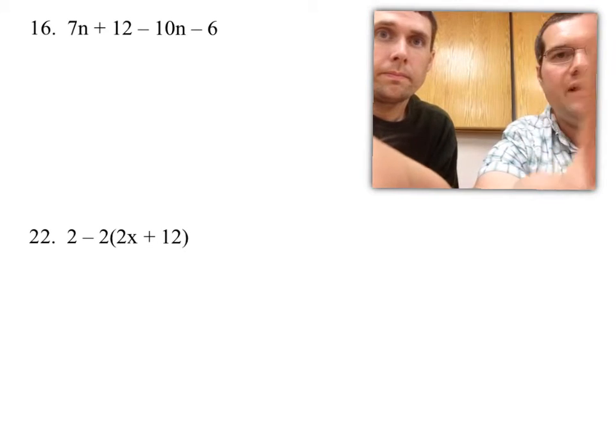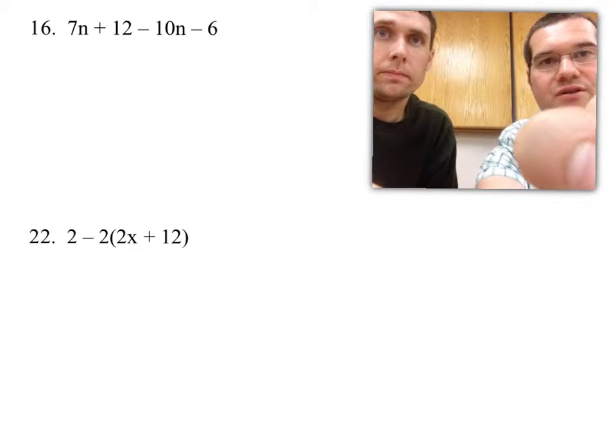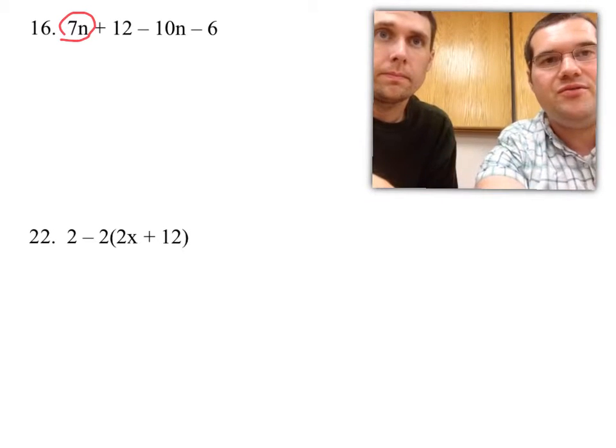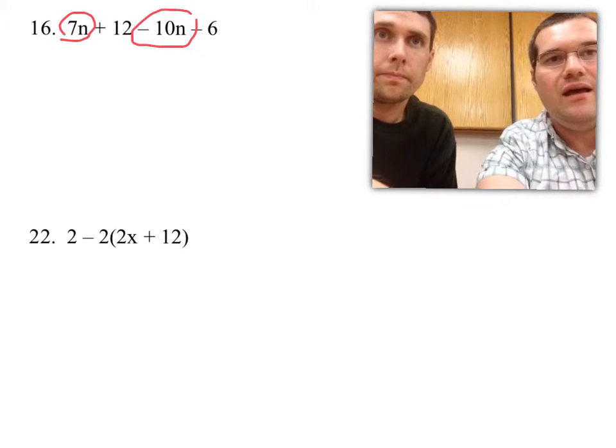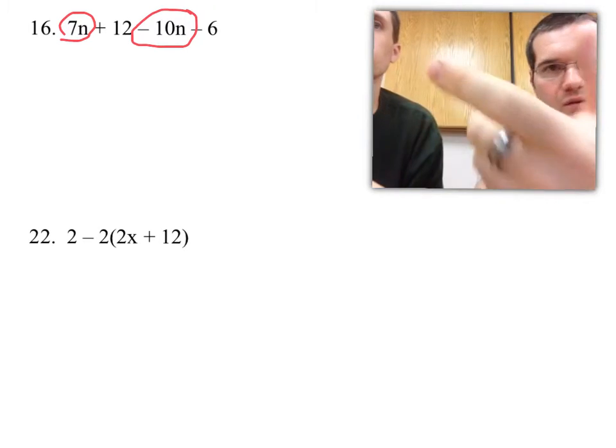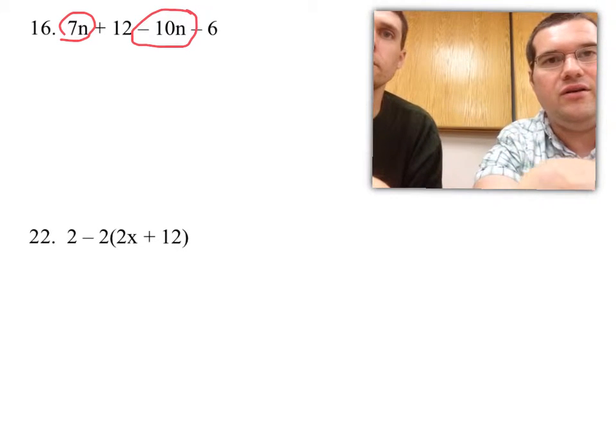And so what we showed you in class is, let's circle what we combine. I usually start with the variables. So I'm going to start with a positive 7n, and then I'm also going to circle, I'm going to go through and I see that there's another variable with an n, and I'm going to circle the sign and the number with the variable. So that's a negative 10 and a positive 7. And like we learned back in unit 1,